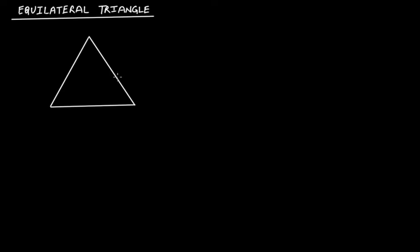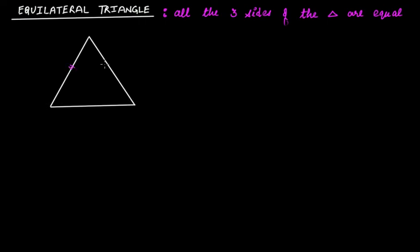An equilateral triangle means if any triangle has all the three sides of the triangle are equal. So if this is an equilateral triangle, then this side is equal to this side is equal to this side. If the length of any one side is 'a' meters, then this will also be 'a' meters and this will also be 'a' meters.